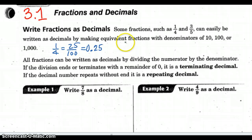3 fifths, if we multiply both by 2, you can turn that into 6 over 10. 6 tenths is the same thing as 3 fifths, and you can easily think of that as 0.6.